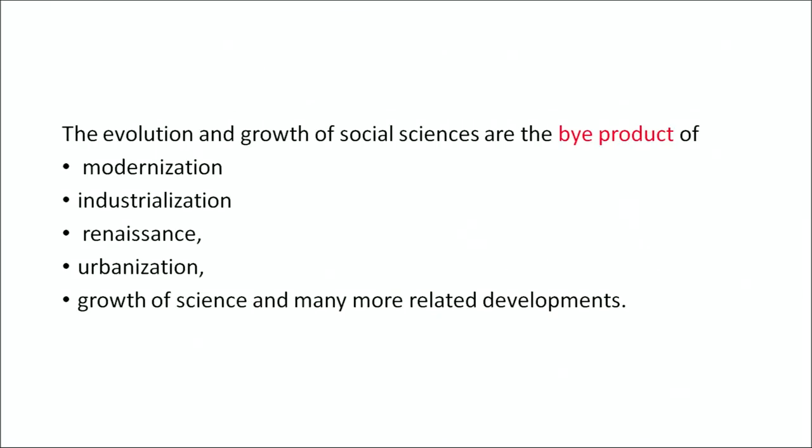Social Science has its origin in the 18th century, while Social Studies, which draws its content from different Social Sciences, evolved only during the 20th century and found its position in school curriculum very soon. The evolution of Social Sciences is a byproduct of modernization, industrialization, renaissance, urbanization, growth of science, and many other related developments. The new way of thinking initiated by people like Galileo Galilei and Isaac Newton had great influence on the evolution of modern Social Sciences.